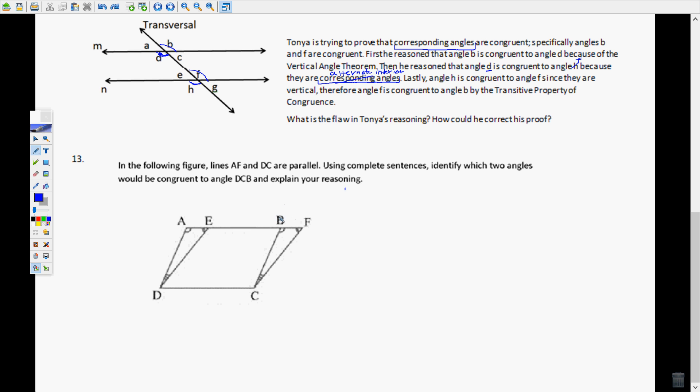Picking up where we left off on number 13. In the following figure, lines AF and DC are parallel. So we'll mark that. Using complete sentences, identify which two angles would be congruent to angle DCB and explain your reason.